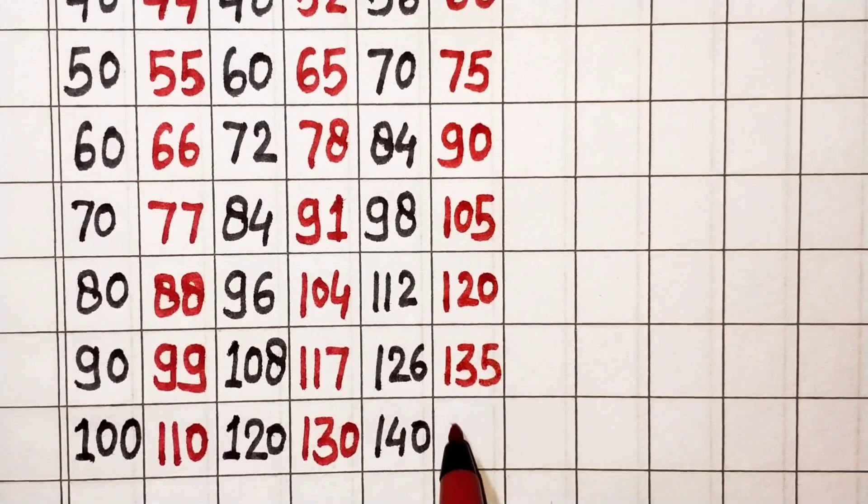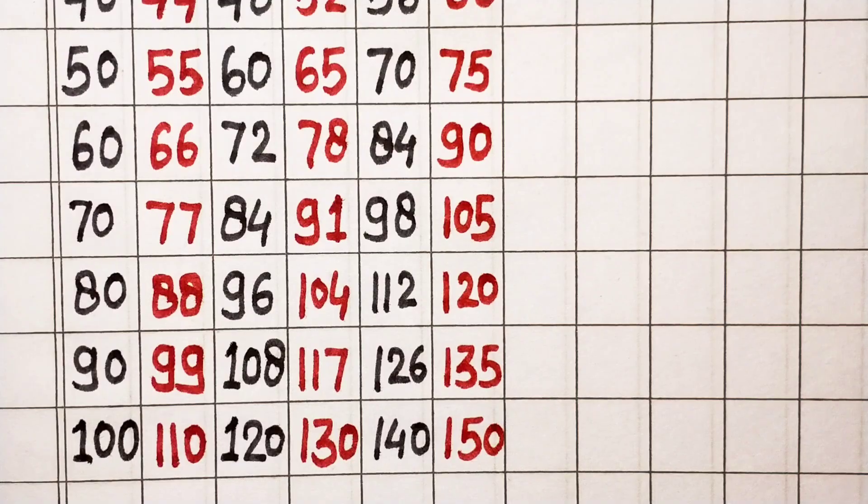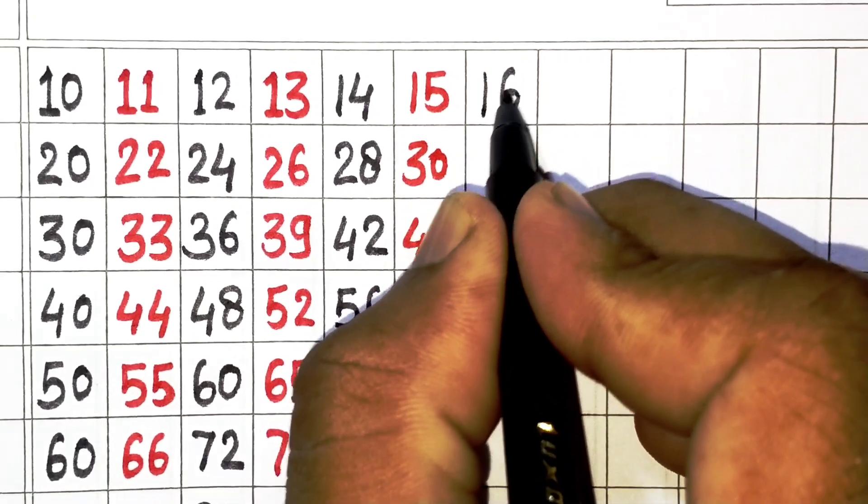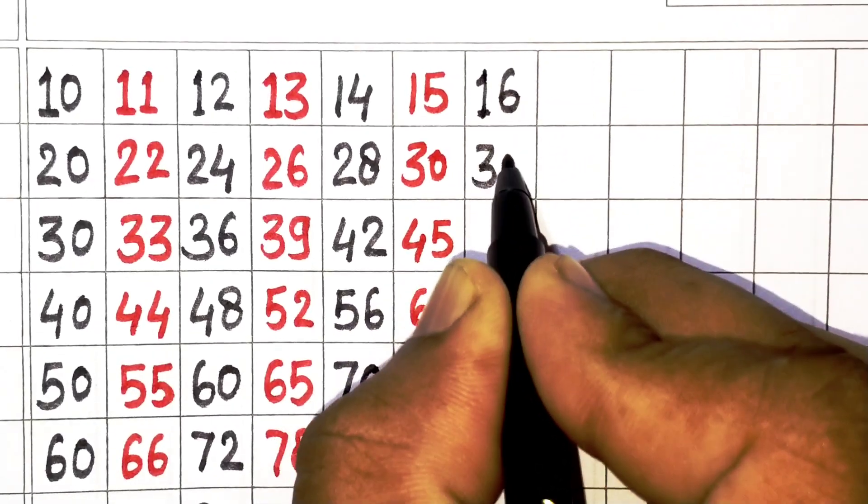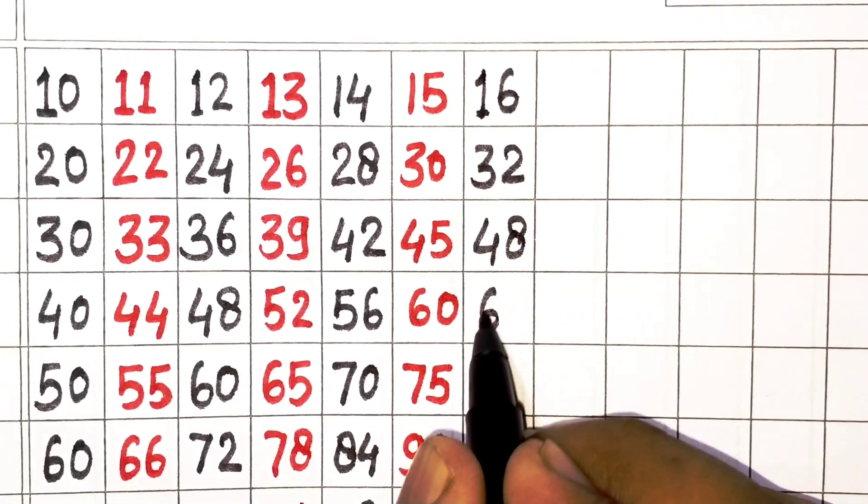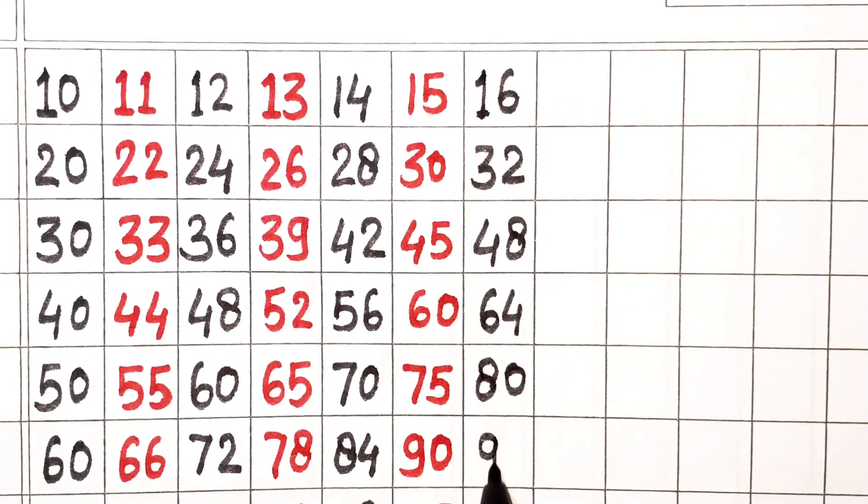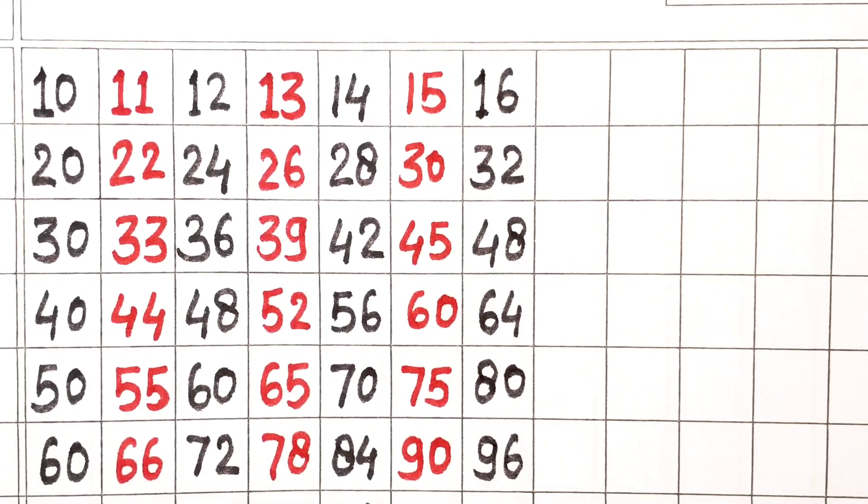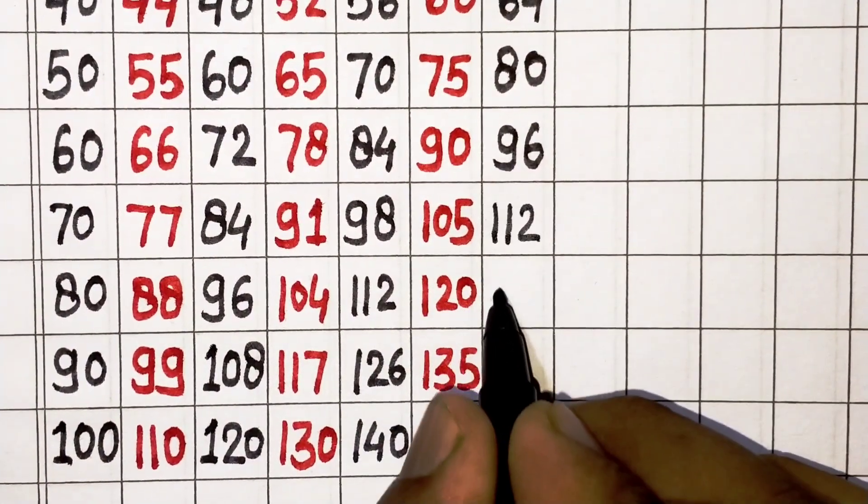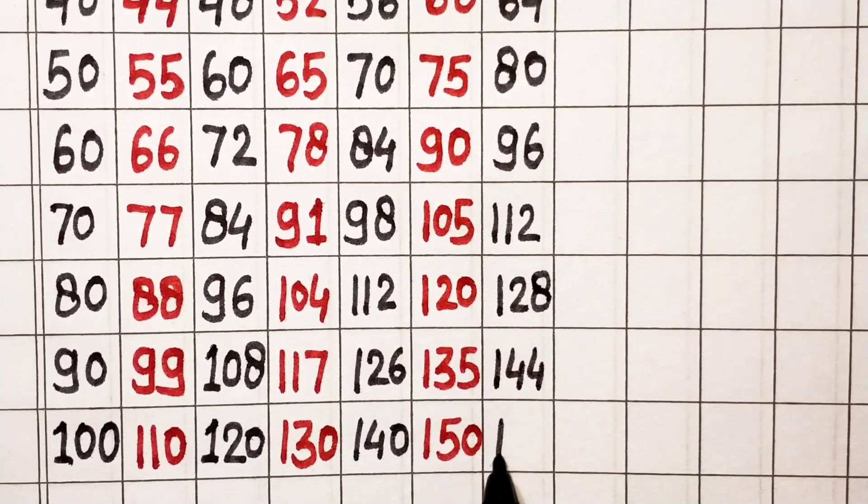Next, 16. 16 ones are 16, 16 twos are 32, 16 threes are 48, 16 fours are 64, 16 fives are 80, 16 sixes are 96, 16 sevens are 112, 16 eights are 128, 16 nines are 144, 16 tens are 160.